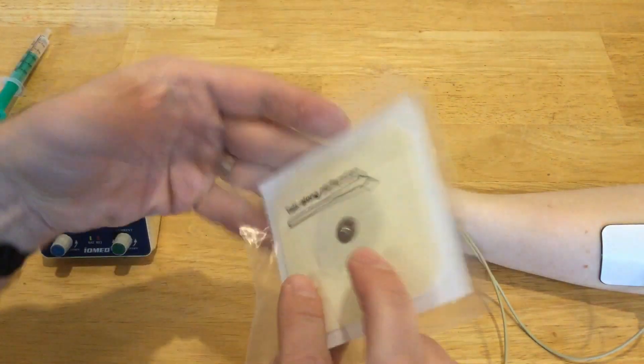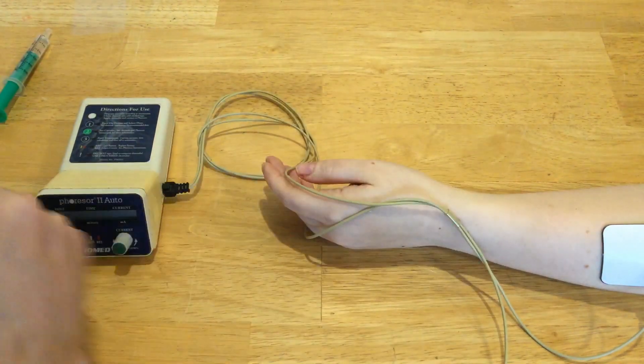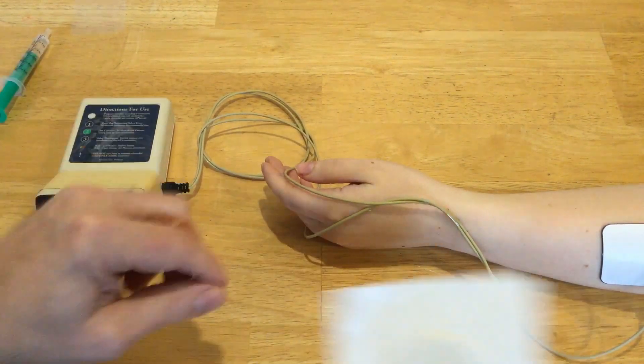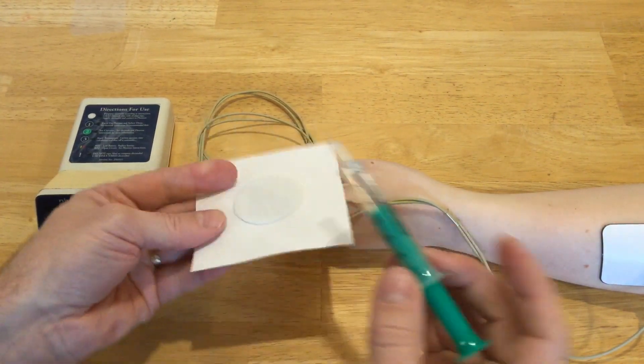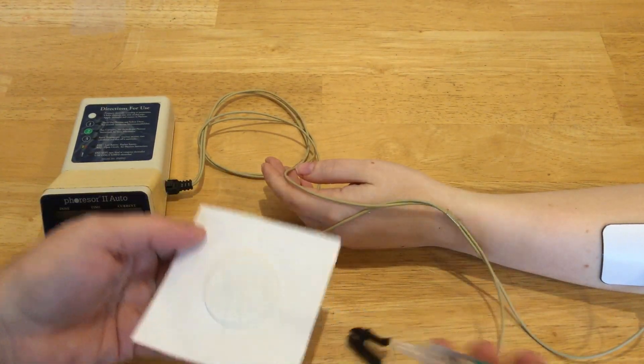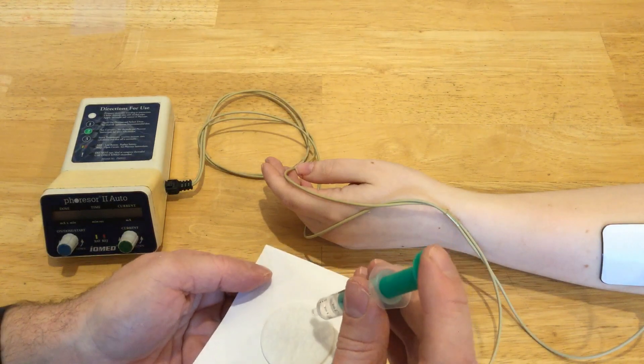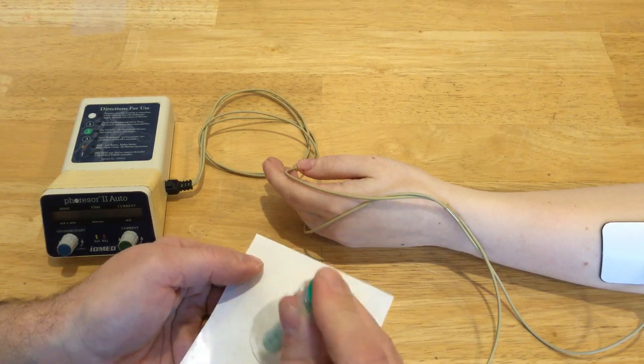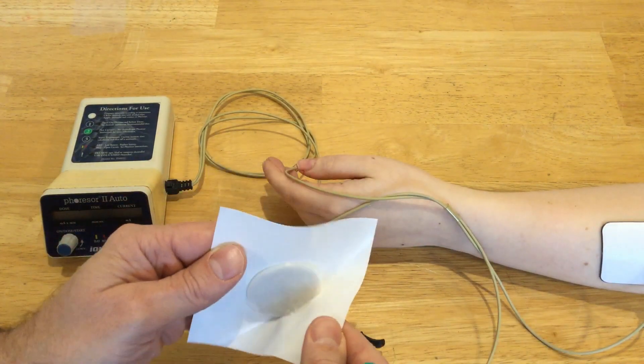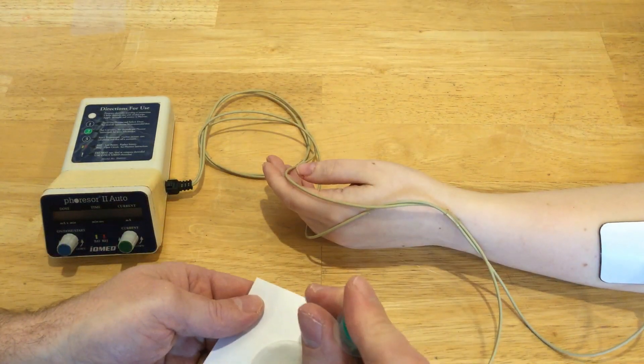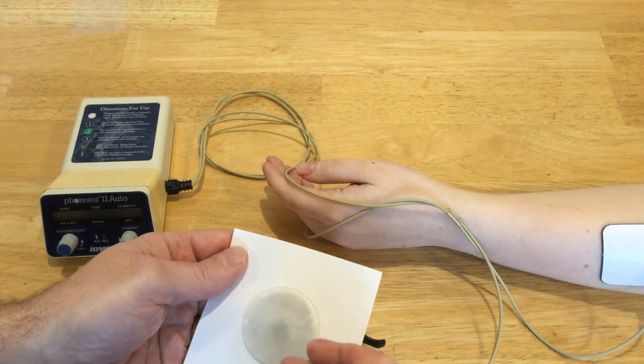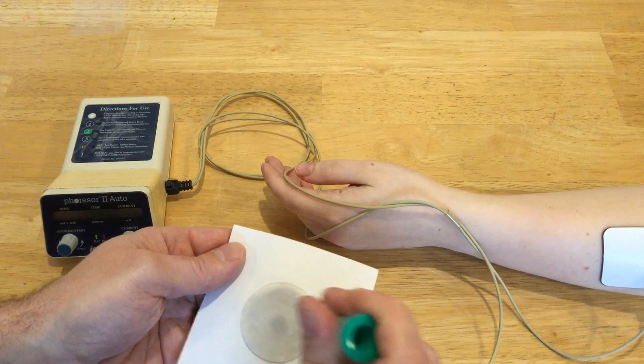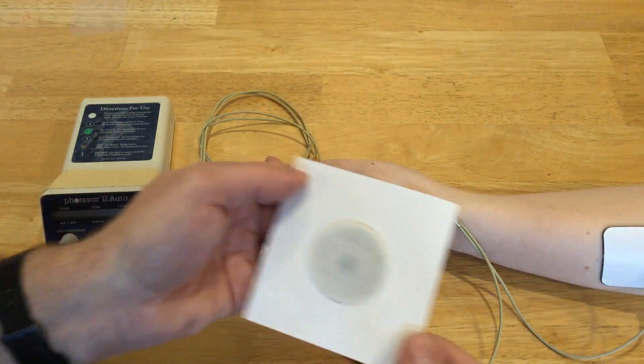For my medication electrode, the first thing I have to do is apply the medication. For the purpose of this video, I'm just using saline and pretending it has a negative charge. I'm working it in there so it all gets on the medication sponge. You want enough so you don't have any dry spots, but not too much or it'll ooze all over and your electrode won't stick the way you want it to.